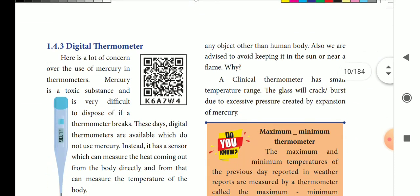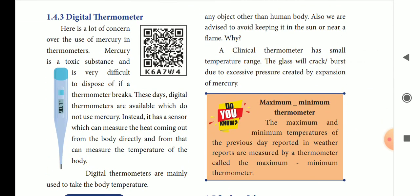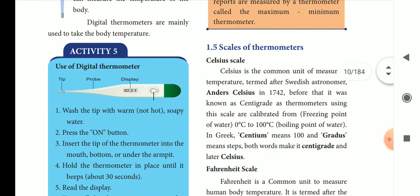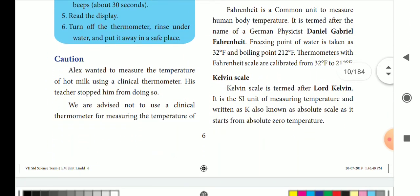Next is the digital thermometer. In the clinical thermometer there is mercury, and mercury is a toxic substance. So now we use digital thermometers with a sensor to measure body temperature. This is mainly used to take body temperature.